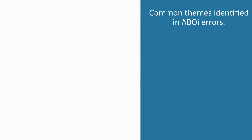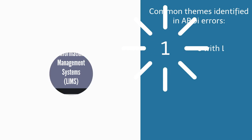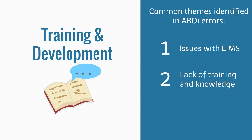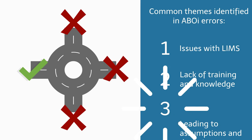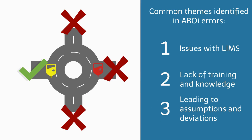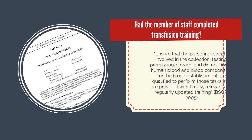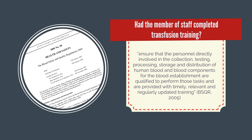The common themes identified in ABOI errors are: laboratory information management systems allowing non-group O red cell issue in emergency, and no rule to prevent release of group O FFP in emergency, lack of adequate staff training and knowledge, leading to assumptions and deviations. The blood safety and quality regulations of 2005 state that personnel involved with transfusion procedures should be trained, and this training should be timely, relevant, and regularly updated.